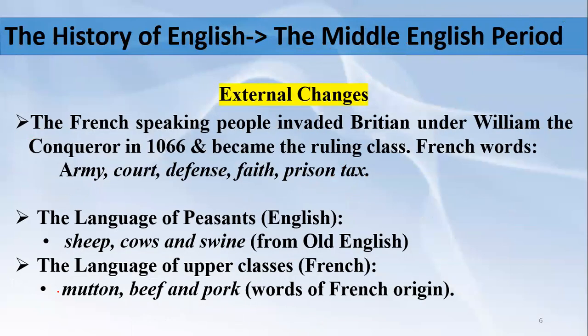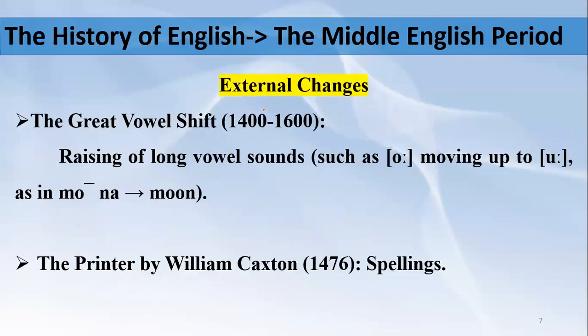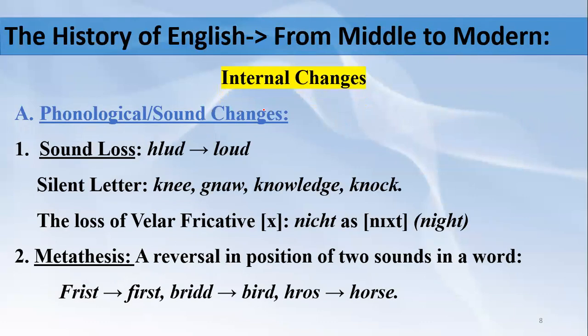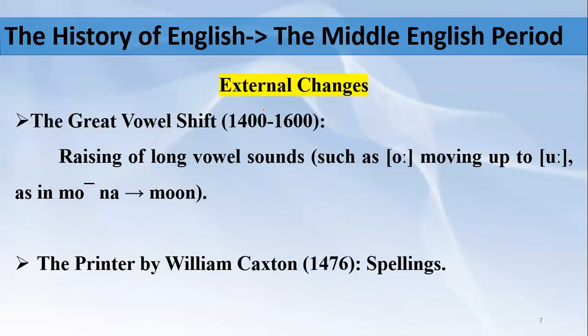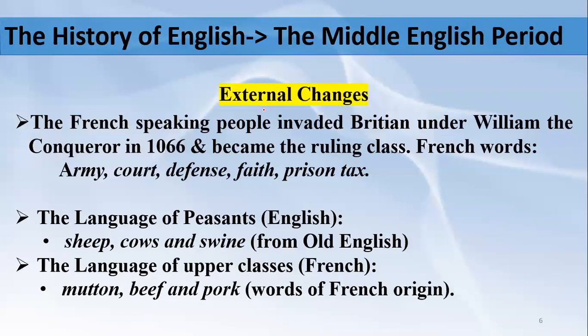Now we have the Middle English period. While talking about Middle English, our focus will be on the important factors which contributed to its development, and then on certain changes — the changes which took place when English was converted from the Old English period into Middle English. Starting with the external changes — those changes brought by external factors like certain wars or external influences, not from within the language itself.